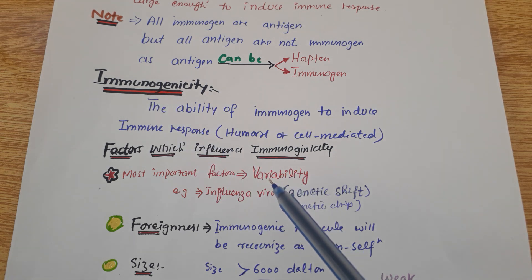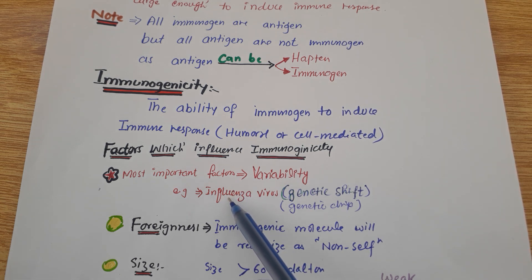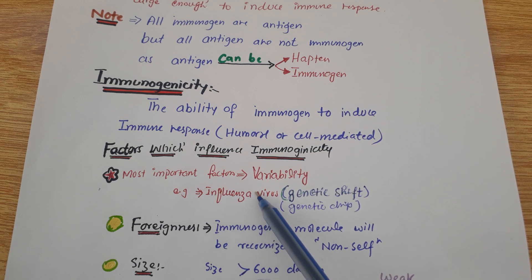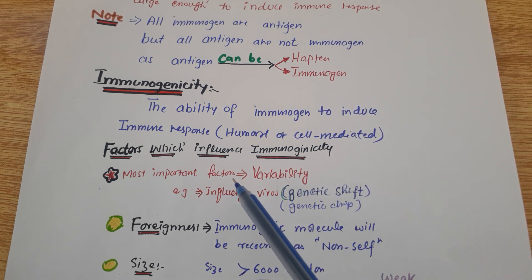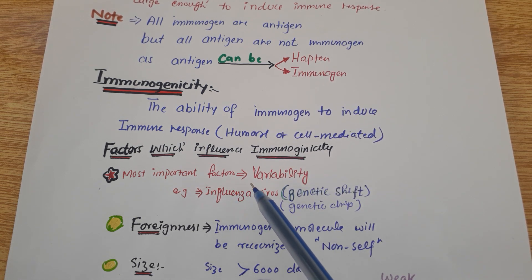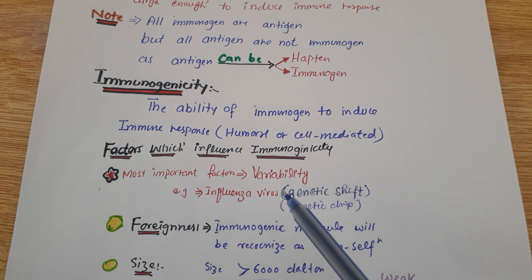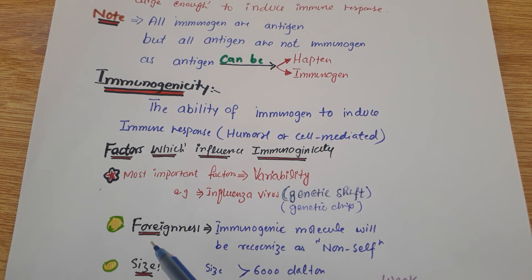The most important factor which influences immunogenicity is variability — variation in the genetic structure. For example, in the influenza virus, genetic shift and genetic drift occur, which lead to the variability of the influenza virus.